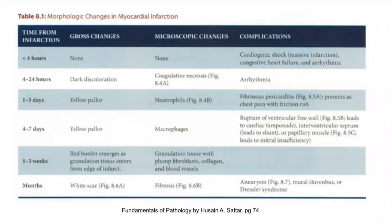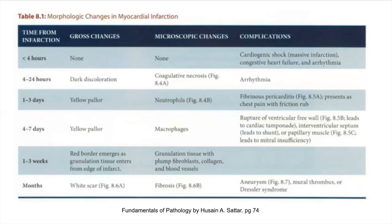In pathology it's important to look at the morphological changes during myocardial infarction. In less than 4 hours, there are no microscopic or gross changes, but complications like congestive heart failure or fatal arrhythmias may occur. In the 4-24 hour period, the myocardium undergoes coagulative necrosis, appearing as dark discoloration grossly, with hallmarks of preserved structure, increased eosinophilia, and lack of nuclei. Arrhythmias are the major complication in this period.